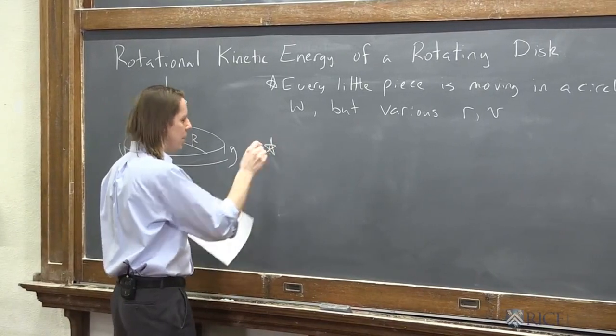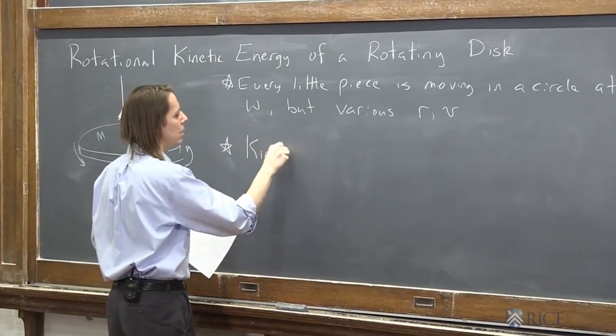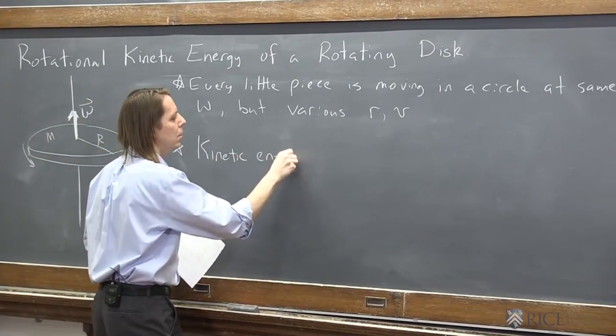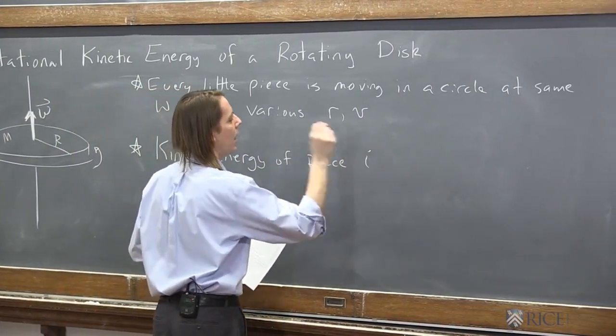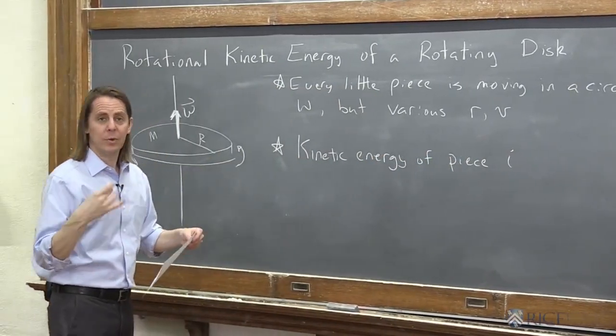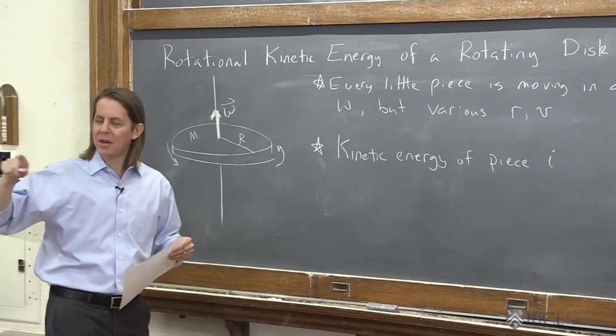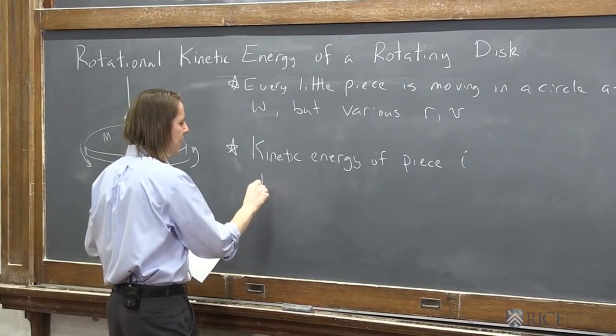All right, so now we're ready. So now we're going to get the kinetic energy of piece i. And we're going to use our translational way to calculate kinetic energy, because we can think of that little piece as just going in a circle at some speed v.